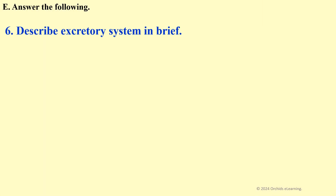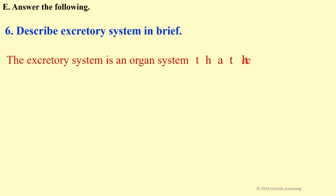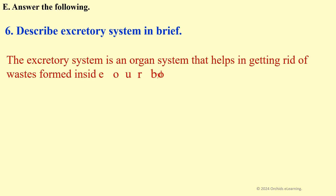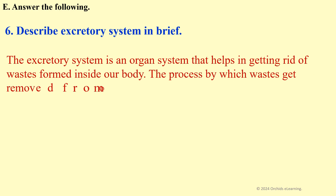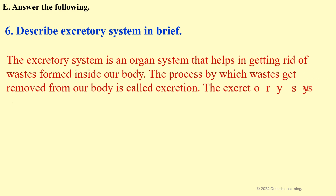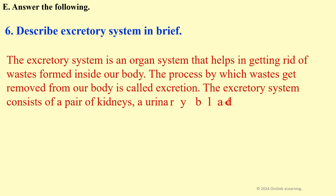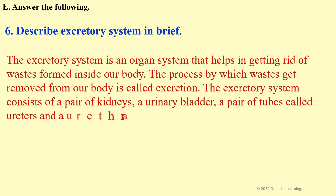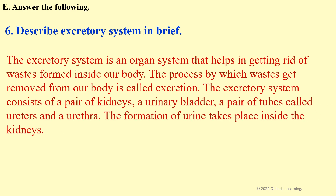Describe the excretory system in brief. The excretory system is an organ system that helps in getting rid of wastes formed inside our body. The process by which wastes get removed is called excretion. The excretory system consists of a pair of kidneys, a urinary bladder, a pair of tubes called ureters, and a urethra. The formation of urine takes place inside the kidneys.